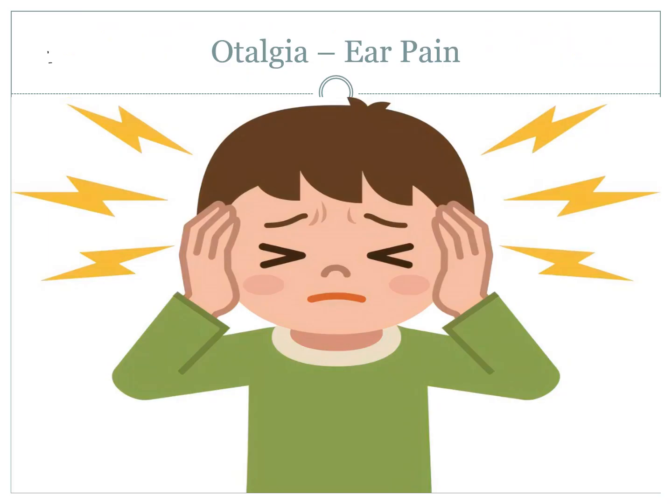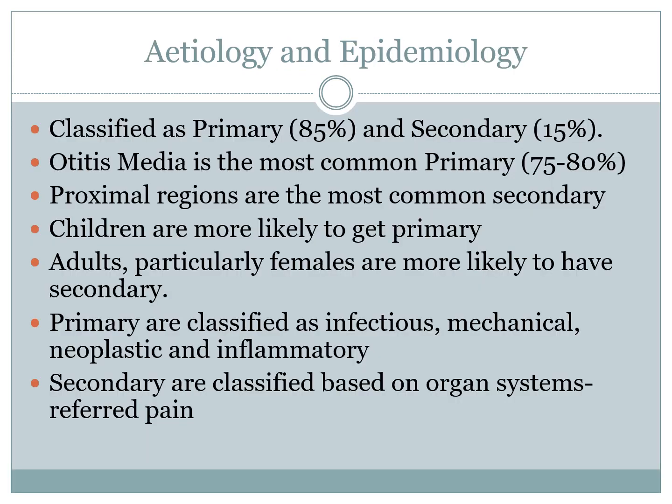Hello and welcome to another Piper Pearl. Today's pearl we're going to be looking at otalgia, so we'll move right along with a bit of etiology and epidemiology. When we talk about otalgia it's classified into primary and secondary causes. Primary causes are the most common, taking up 85% of all cases. Overall, 85% of ear pain cases will be of a primary cause and secondary will be the remaining 15%.